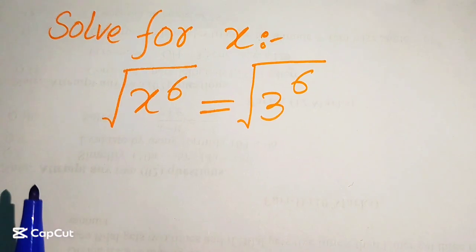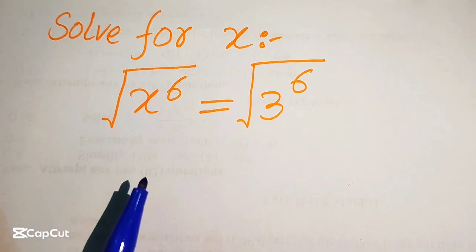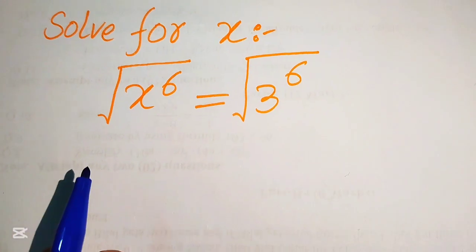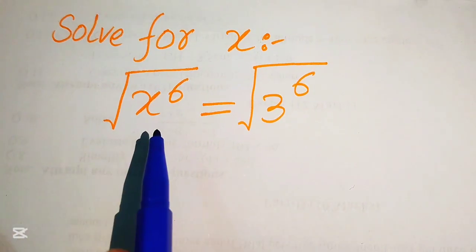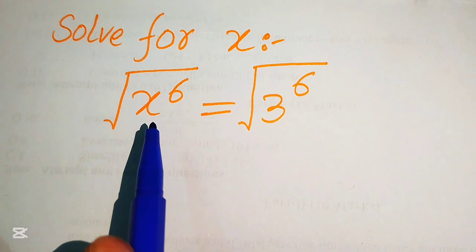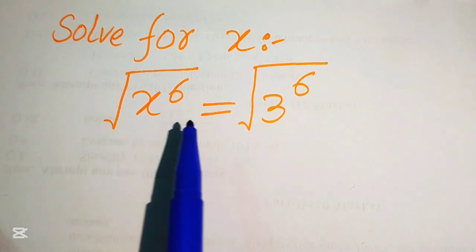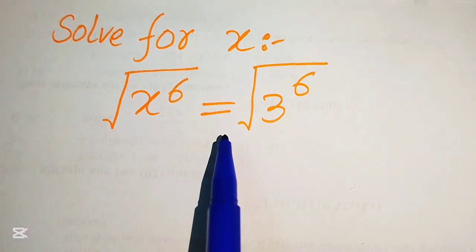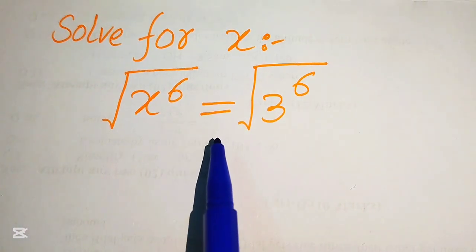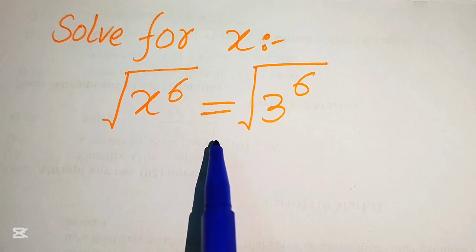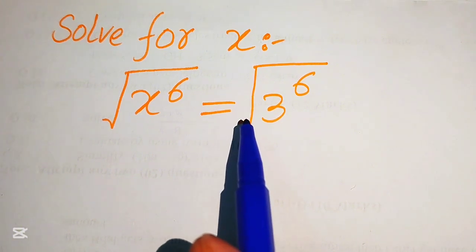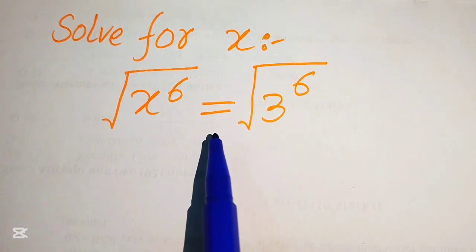Hello everyone, welcome to solve this nice math algebra problem. So here we have x to the power of 6 and its whole square root equals to 3 to the power of 6 and its whole square root, and we solve this problem for the values of x.